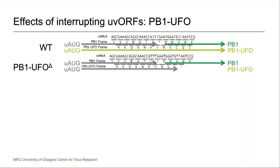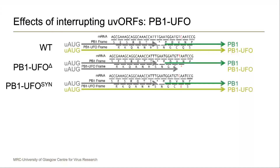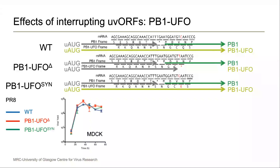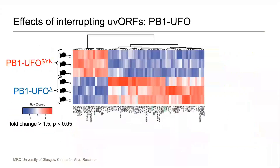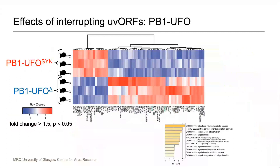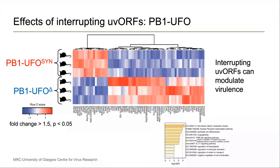We can do a similar experiment with the overlapping PB1 UFO: either introducing a stop codon to interrupt it, or a synonymous mutation at the same position. Once again, the viruses behave the same in tissue culture. But in mice this time, the virus which lacks the overlapping reading frame is slightly more virulent. And this can be seen in regulation of gene expression, affecting a number of immune regulated processes. We don't yet know why, but this suggests to us that these overlapping upstream viral ORFs can modulate virulence. And we're still working to try and find out why.